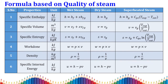Based on the three steam qualities, we need to know the formulas for basic properties. For specific enthalpy (kJ/kg): in the wet condition, h equals hf plus x times hfg, where hf is the specific enthalpy at the liquid stage and x is the dryness fraction — the ratio of mass of vapor to total mass of steam, i.e., x equals mg divided by (mf plus mg).